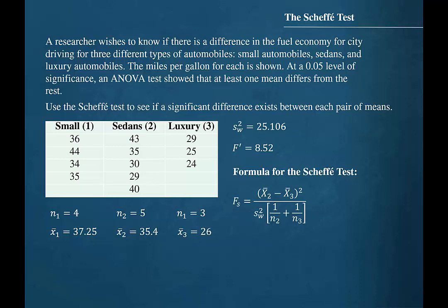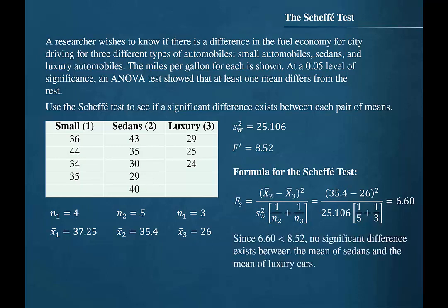Finally, we compare sedans to luxury cars, or group 2 to group 3. Substituting these values into the formula, we find a test value of 6.60. Since 6.60 is less than 8.52, no significant difference exists between the mean of sedans and the mean of luxury cars.